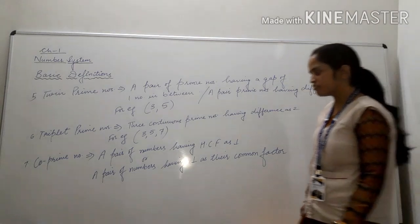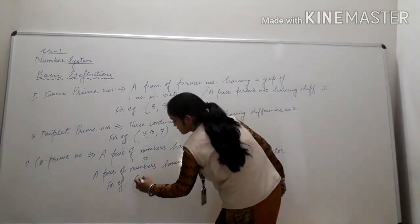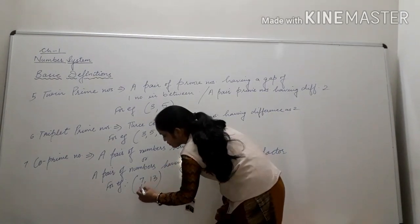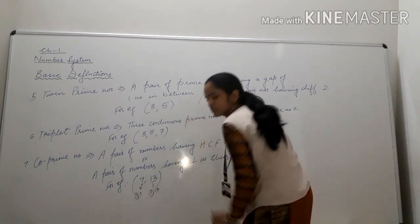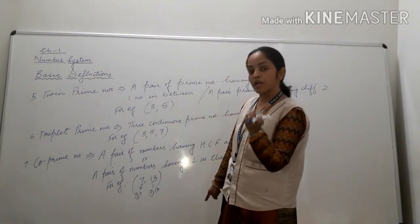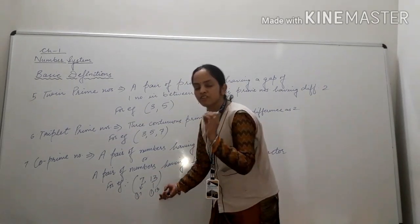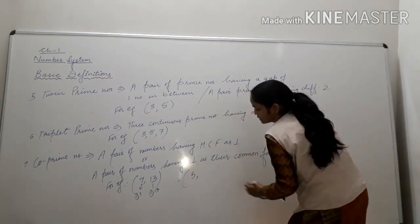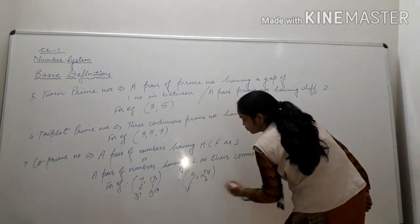For example, take 7 and 13. The factors of 7 are 1 and 7; the factors of 13 are 1 and 13. Both numbers have only 1 as their common factor, so both numbers are called co-prime numbers. Second example: take 5 and 24. The factors of 5 are 1 and 5; the factors of 24 are 1, 2, 3, 4, 6, 8, 12, and 24.